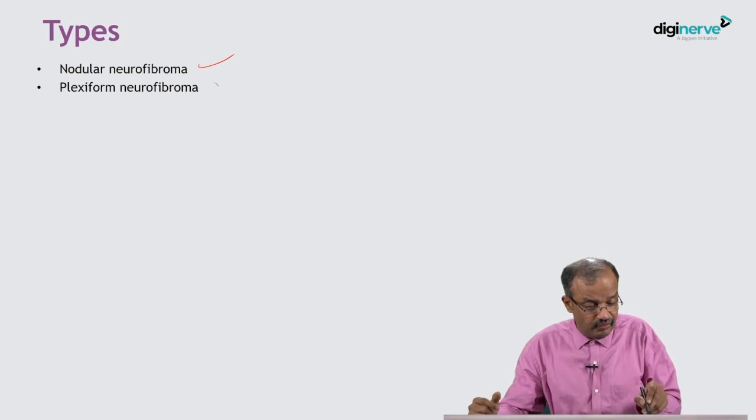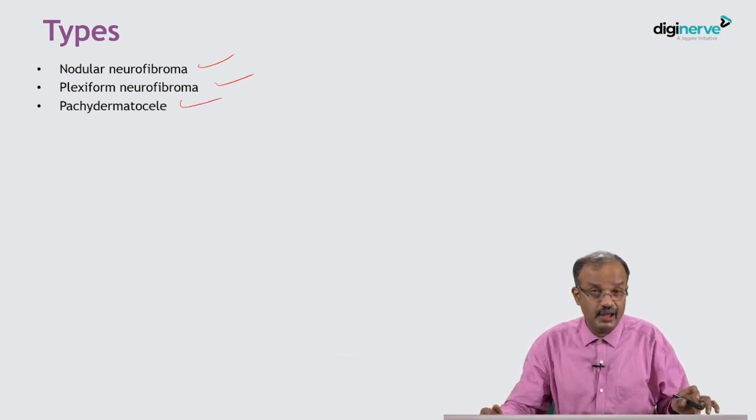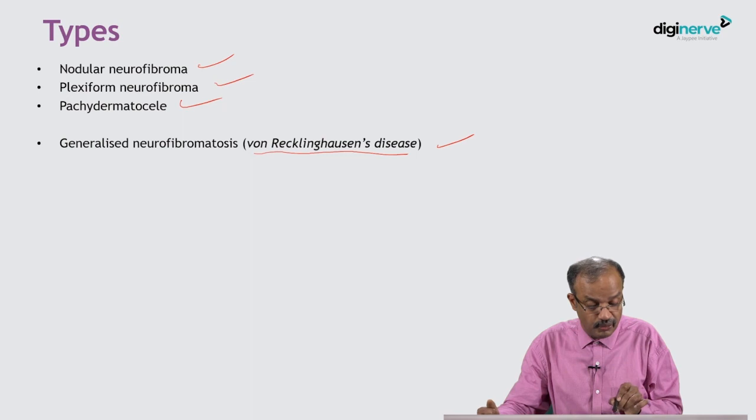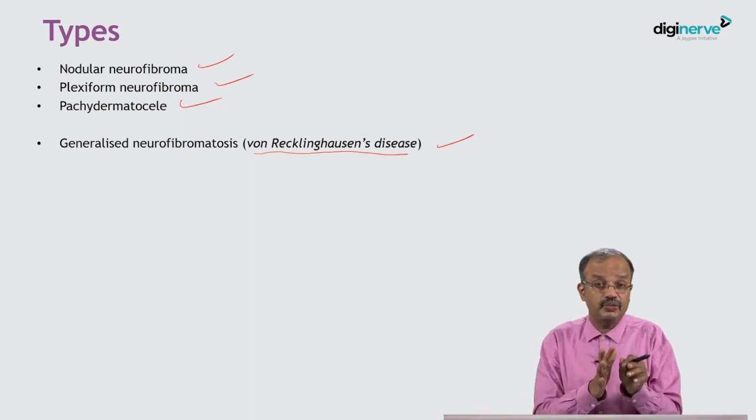In nodular neurofibroma, multiple nodules are present — once you see the picture, you will understand exactly what it looks like. Plexiform neurofibroma hangs down in a characteristic way. Other types include pachydermatocele and generalized neurofibromatosis, also called von Recklinghausen disease of neurofibromatosis. Note that this is different from von Recklinghausen disease of hyperparathyroidism, which is discussed under parathyroid diseases.